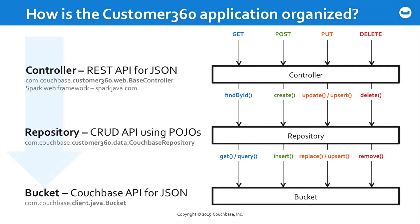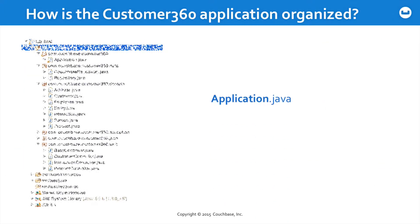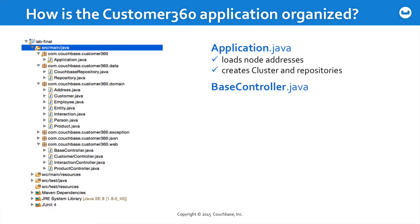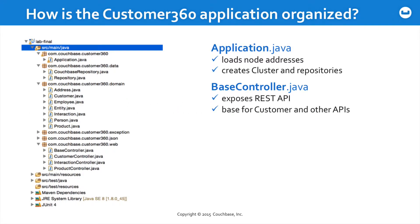We wanted to show how these methods map between one another, because it could be useful if you are also trying to incorporate Couchbase, and potentially a REST API, around existing code that you have handling Java domain objects — POJOs. Inside the code, we'll have you look at Application.java, which is where node addresses will be loaded, and it's what creates the cluster reference and the repository objects. The REST API itself is derived from BaseController.java, and then it's derived for specific APIs, for example, for handling customer objects.